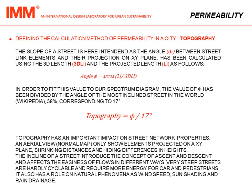Topography has an important impact on street network properties. An aerial view only shows elements projected on the XY plane, shrinking distances and hiding differences in height. The incline of a street introduces the concepts of ascent and descent and affects the ease of flow in different ways. Very steep streets are hardly cyclable and require more energy for cars and pedestrians. Topography also has a role in natural phenomena such as wind speed, sun shading, and rain drainage.